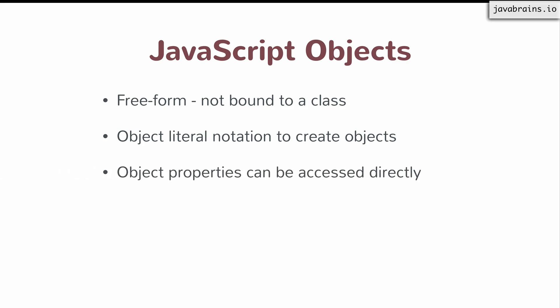Object properties can be accessed directly. There is no private and public here. Everything is public. For the most part, again, there is a hack to solve this problem, but JavaScript does not come with that out of the box. Out of the box, all objects are public and accessible by anybody.